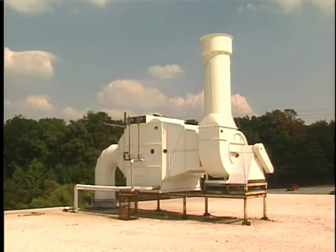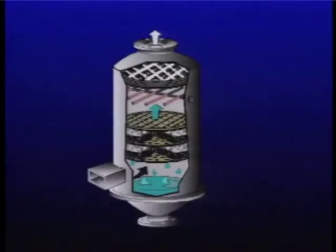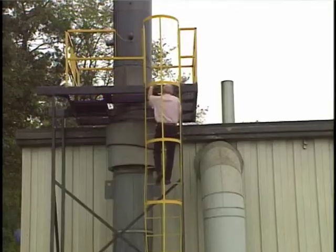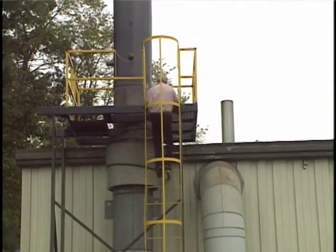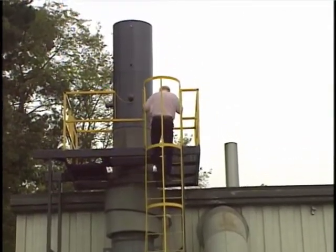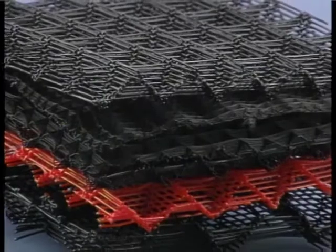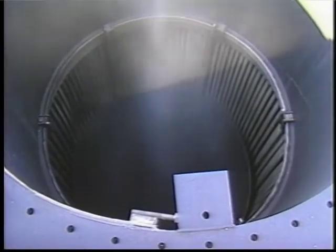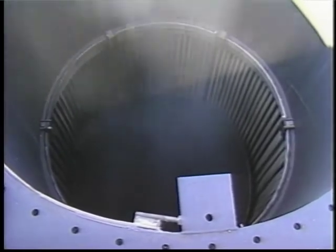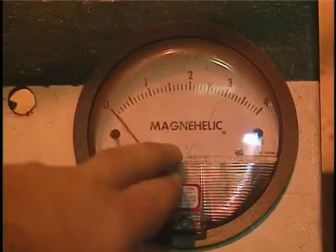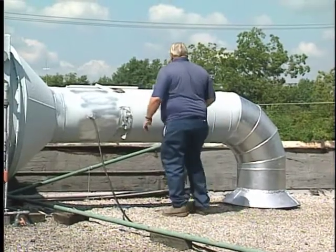Increased pressure drop across the absorber may indicate plugging of trays or packed beds, while a decrease in pressure drop across a tray absorber may indicate warped or collapsed trays. Similarly, the pressure drop across the mist eliminator provides an excellent indicator of its physical condition. For mist eliminators used to remove relatively large droplets, increased pressure drop usually results from a buildup of material on the mist eliminator's surfaces, narrowing the openings and causing higher gas velocities that can drag collected liquid back into the outlet gas stream, reducing collection efficiency. A decrease in pressure drop across the mist eliminator may indicate structural failure.